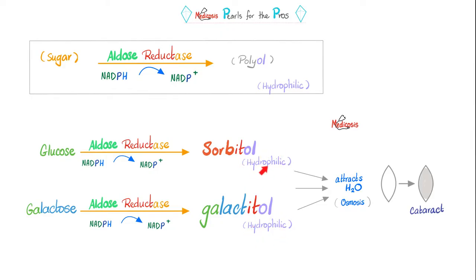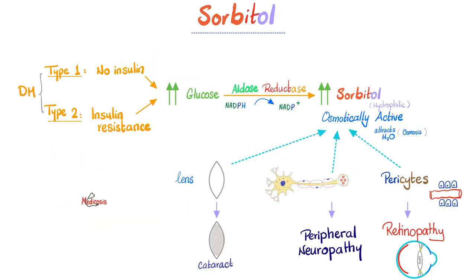Is alcohol water soluble or lipid soluble? Water soluble, of course. Sorbitol and galactitol are osmotically active — they attract water. If you attract water to your clear lens, it becomes unclear: that's called a cataract, probably the most common eye disease. In diabetic patients, too much glucose leads to too much sorbitol, which is osmotically active — it pulls water into the lens causing cataract, pulls water into the nerve causing peripheral neuropathy, and pulls water into the pericytes in the retina causing retinopathy.